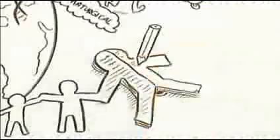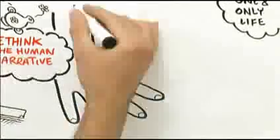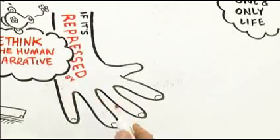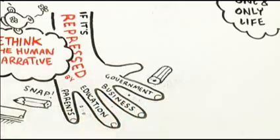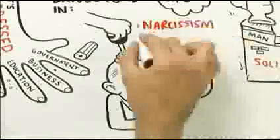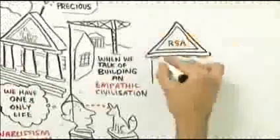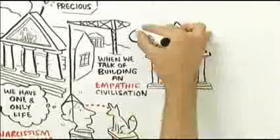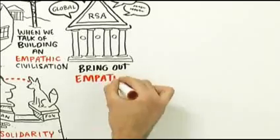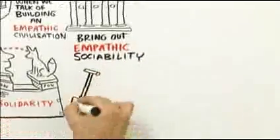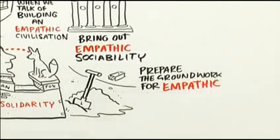We have to rethink the human narrative. If we are truly homo empathicus, then we need to bring out that core nature. Because if it doesn't come out and it's repressed by our parenting, our educational system, our business practice and government, the secondary drives come: the narcissism, the materialism, the violence, the aggression. If we can have a global debate, let us start here from the British Royal Society for the Arts to begin rethinking human nature, to bring out our empathic sociability so that we can rethink the institutions of society and prepare the groundwork for an empathic civilization.